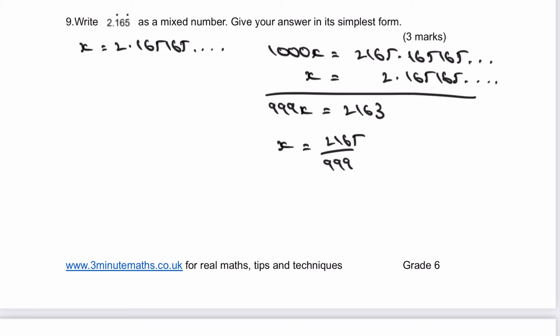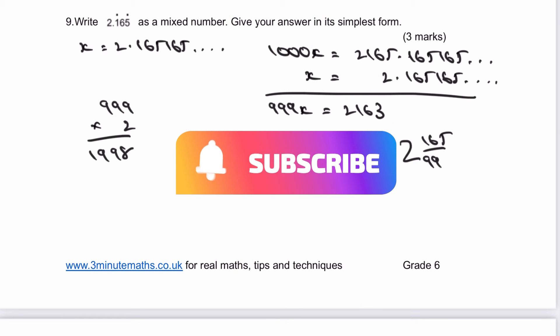Now, it seems a little bit awful at that point. But if you recognize that 999 multiplied by 2 is going to be 1,998, then it basically means I can change this to two wholes. And then I get 165 out of 999 remainder.